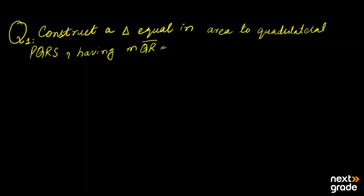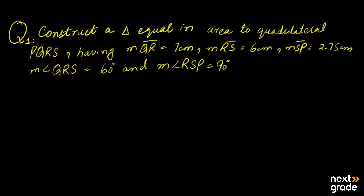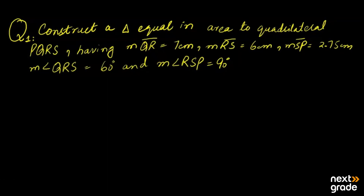The conditions given are: measurement QR equals 7 cm, measurement RS equals 6 cm, measurement SP equals 2.75 cm, measurement angle QRS equals 60 degrees, and measurement angle RSP equals 90 degrees. With the help of these measurements, we have the figure and then the working.